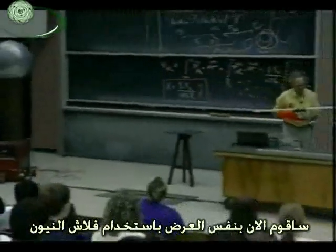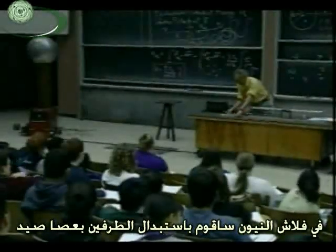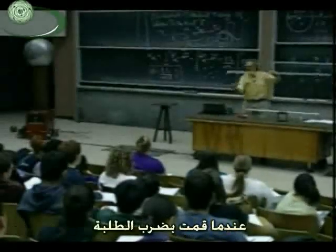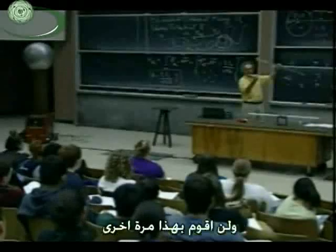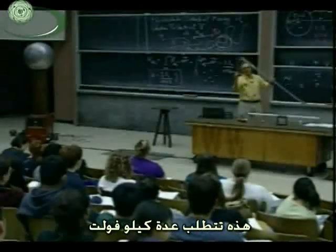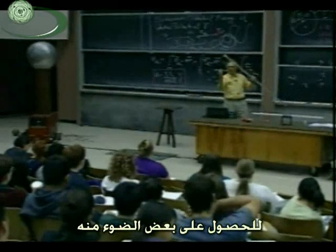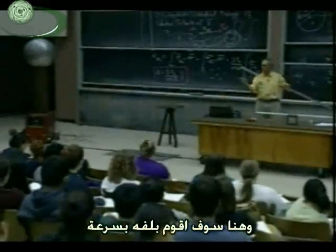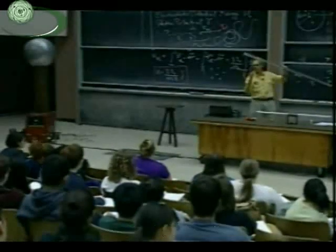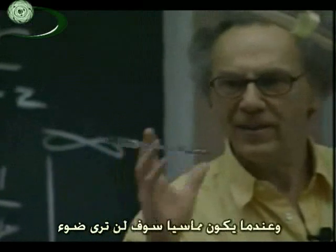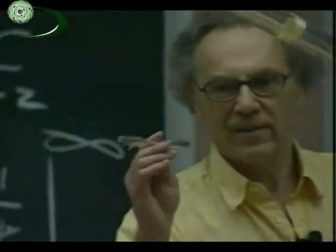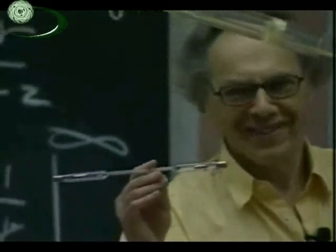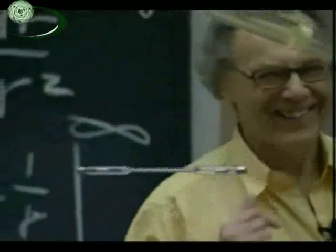Now I want to do the same demonstration with a neon flash tube, which I will place at the end of a fishing rod. This neon flash tube — we used it during the first lecture. It takes several kilovolts to get a little bit of light out of it from one side to the other, but that's duck soup for the Van de Graaff — you're talking about hundreds of thousands of volts. I will start spinning it, and when it is radially oriented, maybe you will see light, and when it is tangential, you won't see much light.